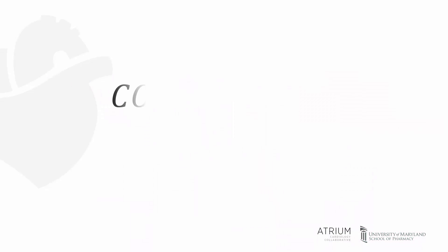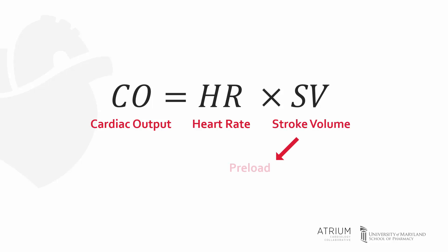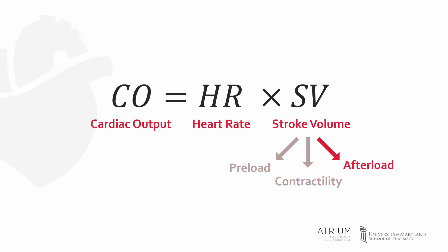Recall the determinants of cardiac output are heart rate and stroke volume. Stroke volume can be further divided into its three determinants: preload, cardiac contractility, and afterload. Today we'll be focusing on afterload.